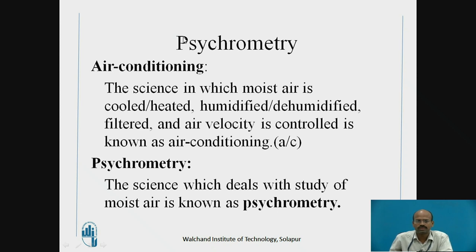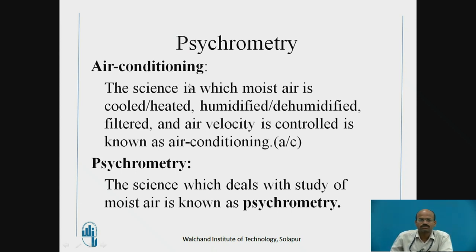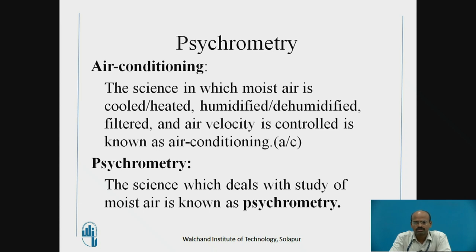So, what is psychrometry? Before studying psychrometry, we must know the definition of air conditioning. As per ASHRAE, air conditioning is the science in which moist air is cooled or heated, humidified or dehumidified, filtered, and the velocity is controlled. If we are able to control all these parameters, that science is known as air conditioning.